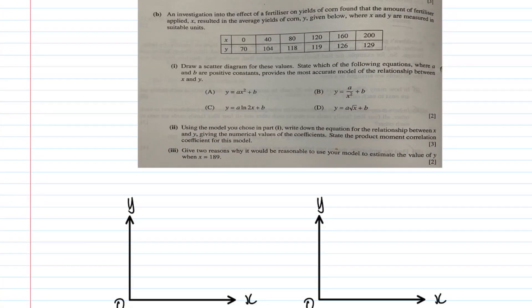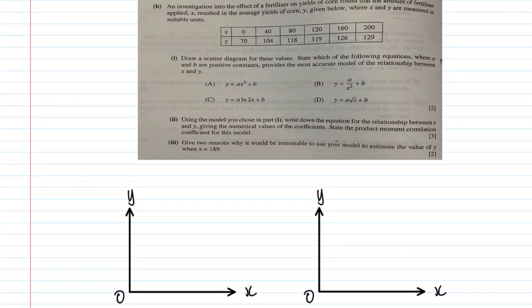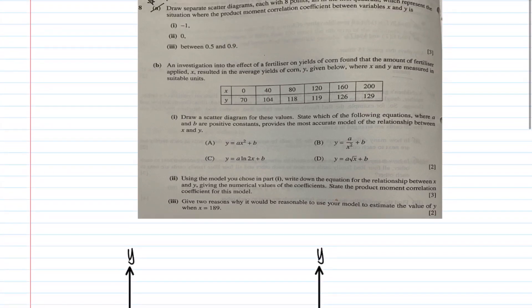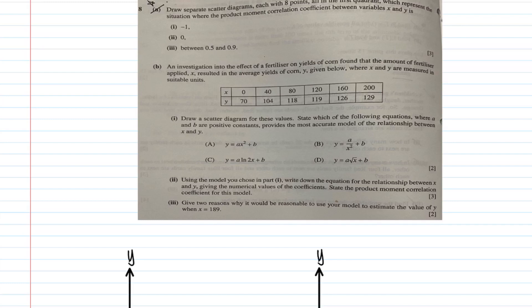Welcome back to A Level Lessons Online. We're back with H2 Math Question 8 from the 2017 A Levels Paper 2. This question looks at the statistics topic of correlation and linear regression, including scatter diagrams and the product moment correlation coefficient.